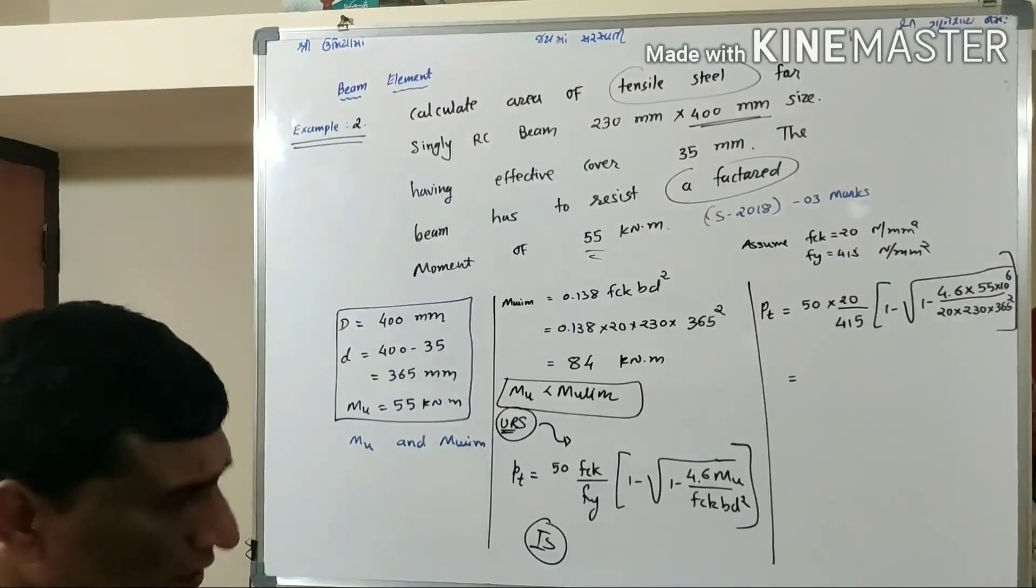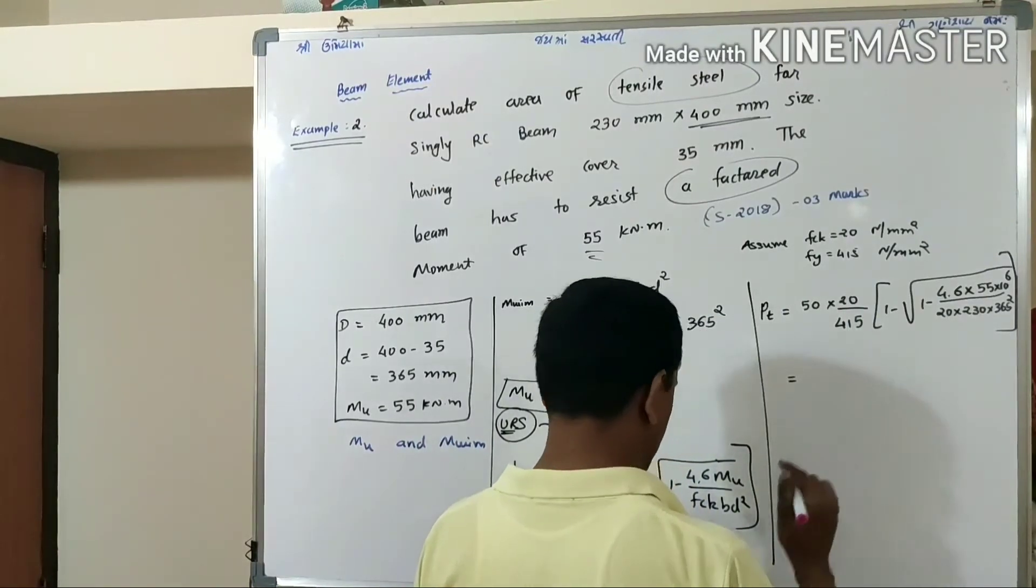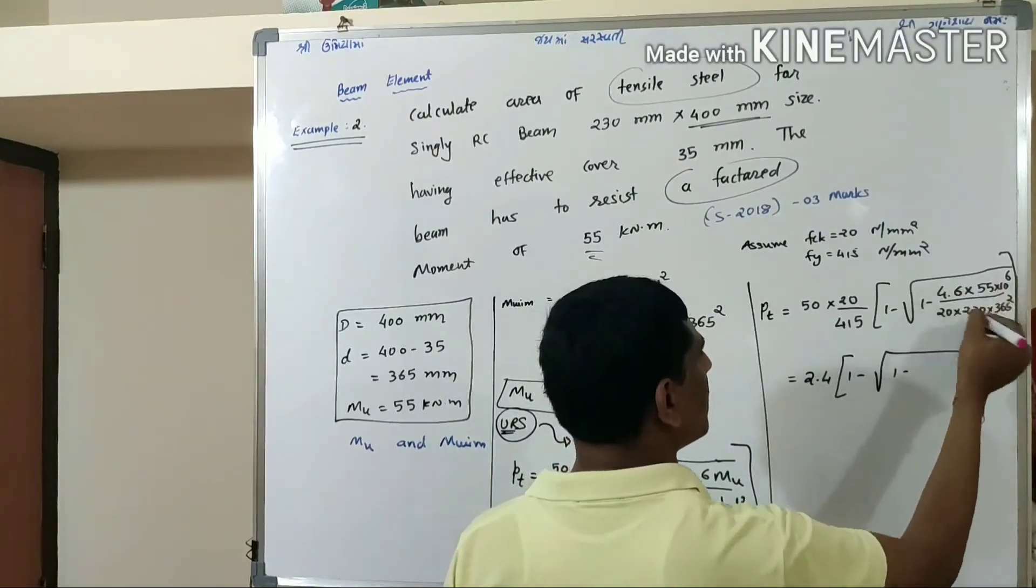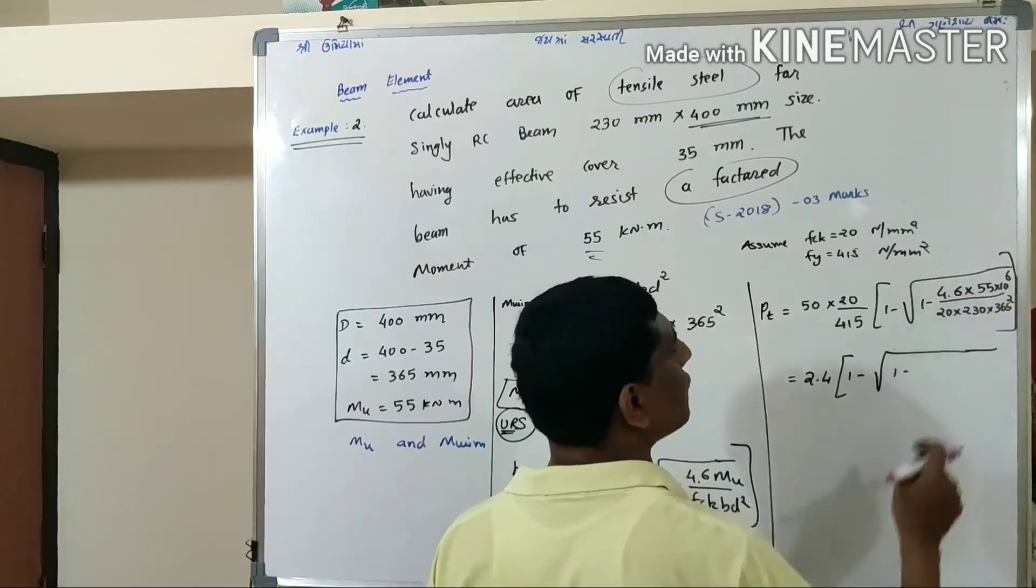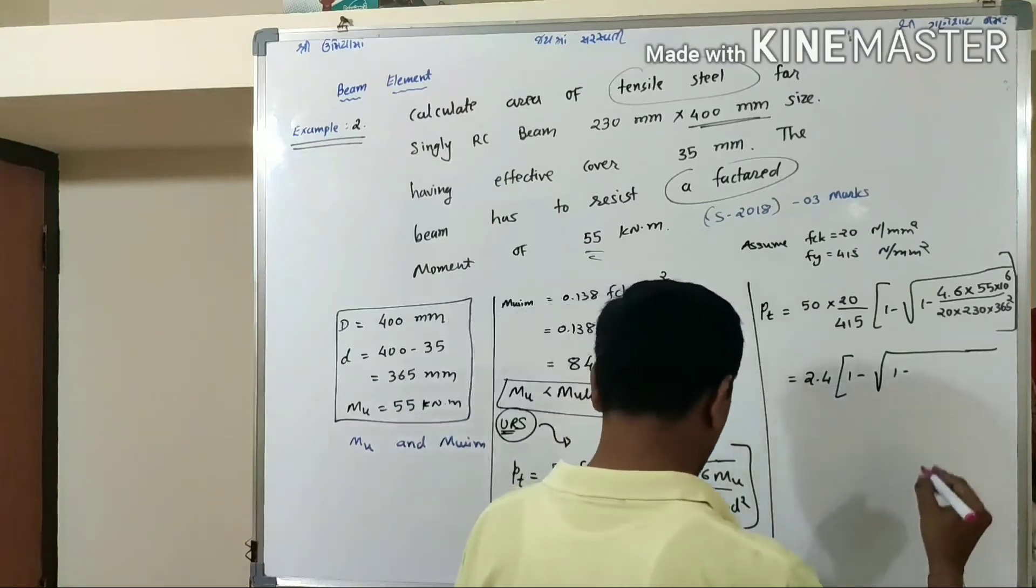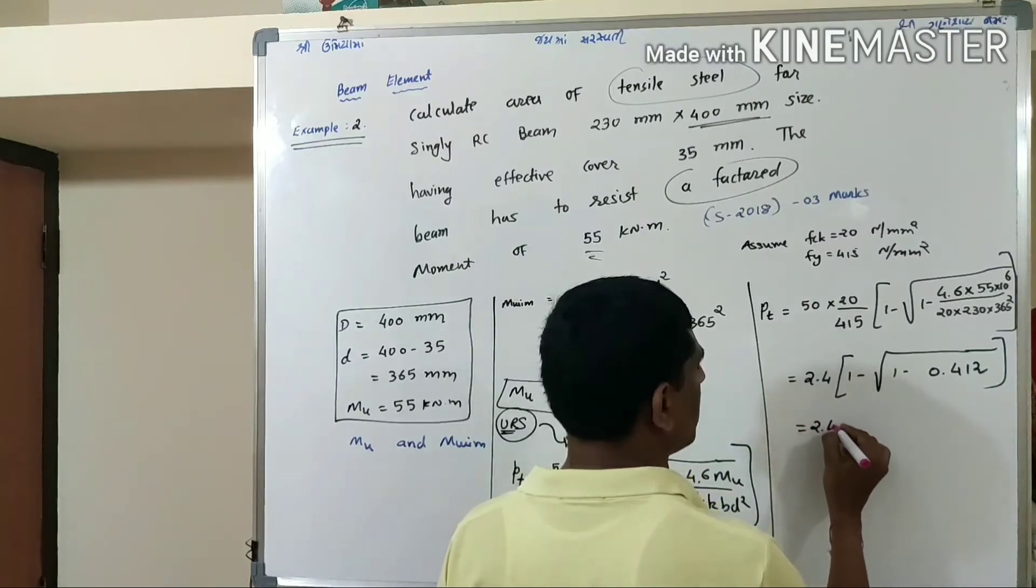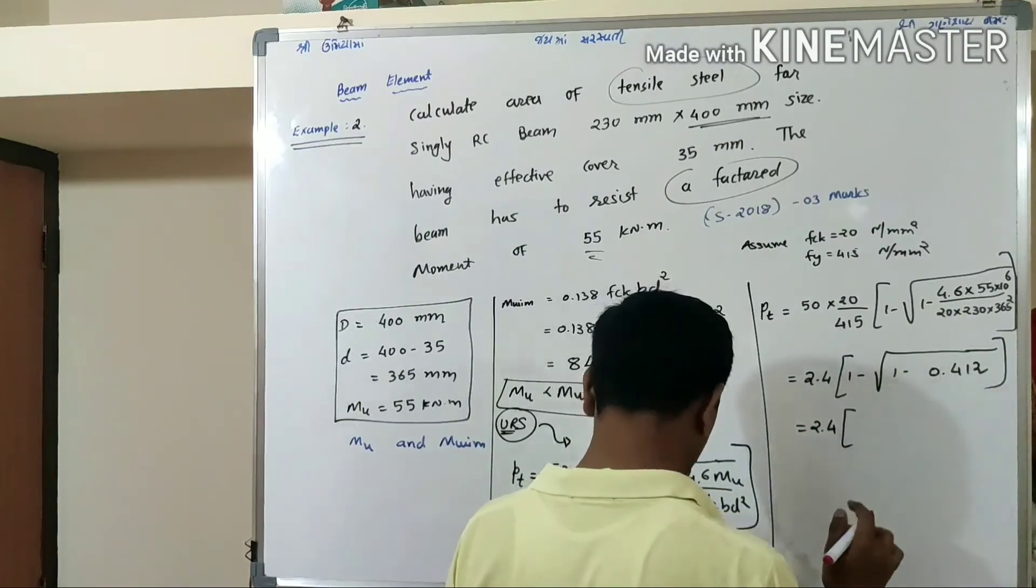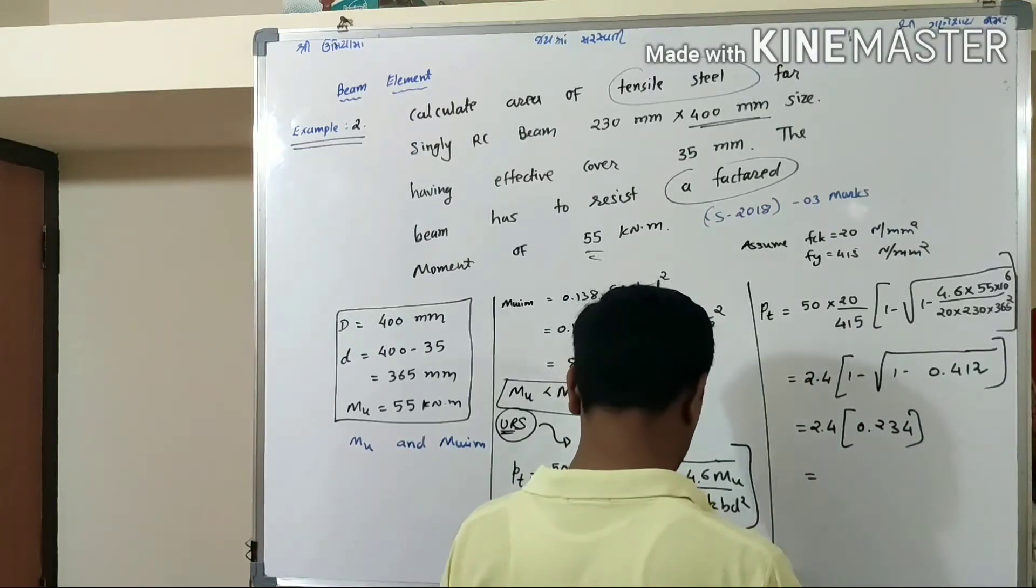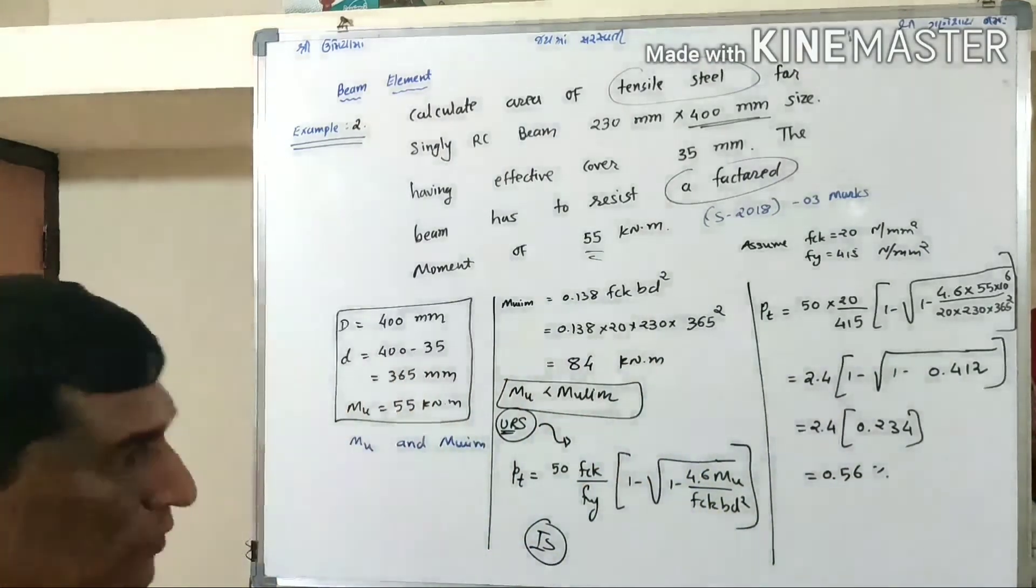I have calculated it: 2.4 [1 - sqrt(1 - 0.412)] = 2.4 × 0.234 = 0.56 percentage.